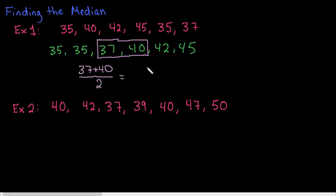So I would add 37 plus 40, which gives me 77, and then divide that by 2. So the median of this data set is 38.5.